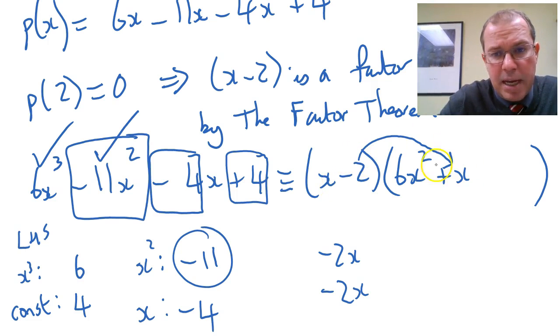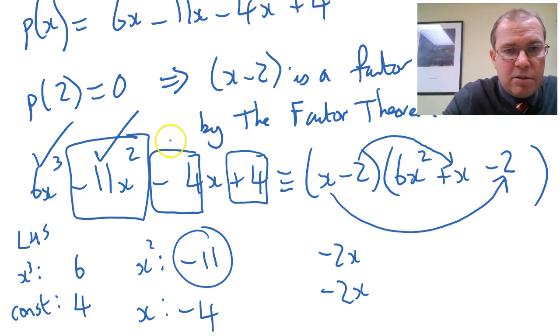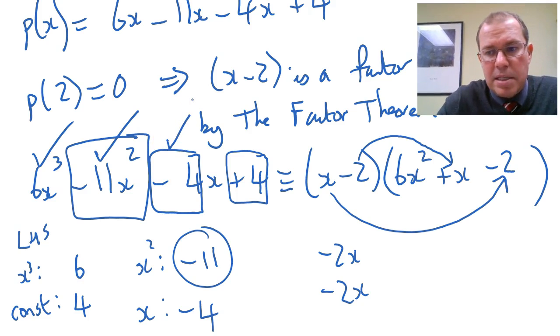The number times x is one way. The other one is x times a number. So I know that this number here has to be minus 2, because that will give me the minus 2x minus 2x gives me the minus 4x. So we can see really simply that that has to be minus 2.